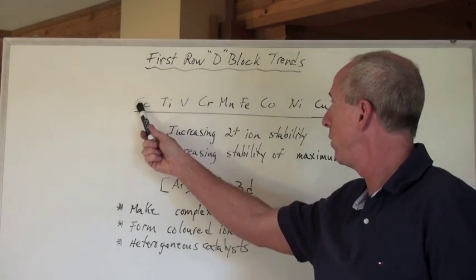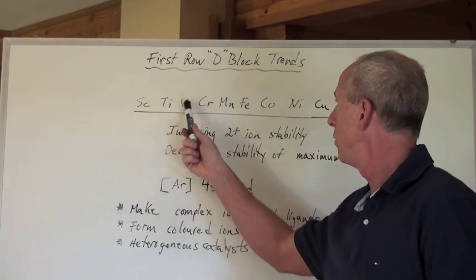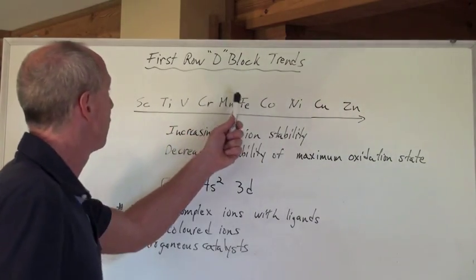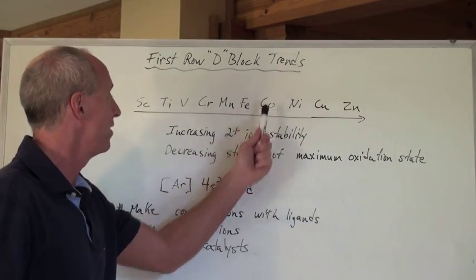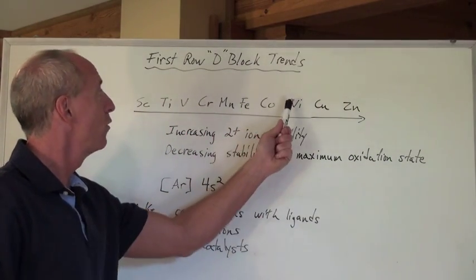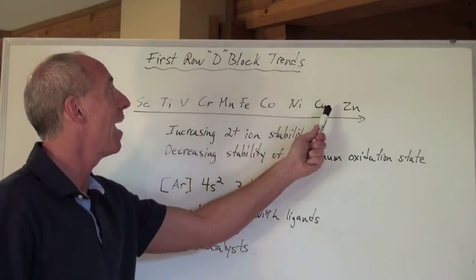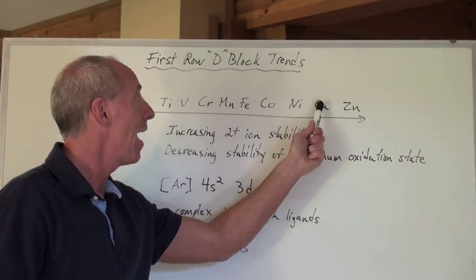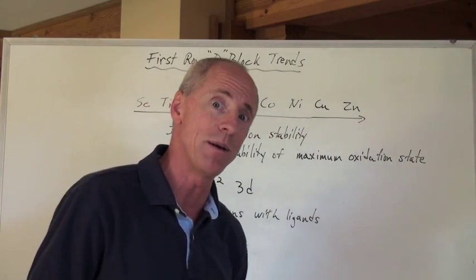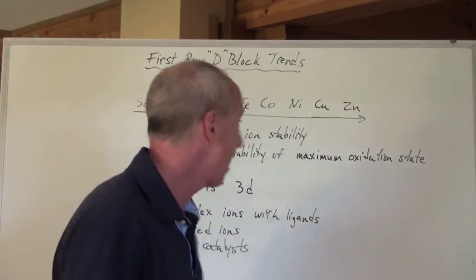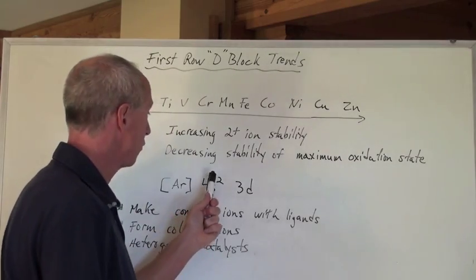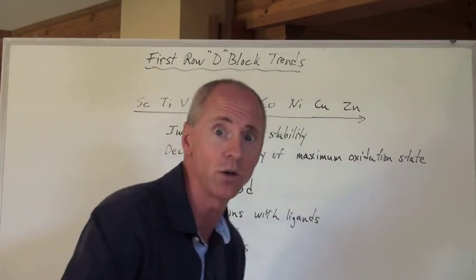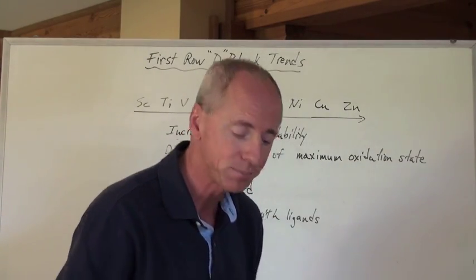Scandium being 3d1, then 3d2, 3d3, 3d4, 3d5, 3d6, 3d7, 3d8 — and then 3d10 for zinc, and 3d10 for copper too, remember? Because it's actually an exception: copper goes 4s1, 3d10. You have to know that exception.